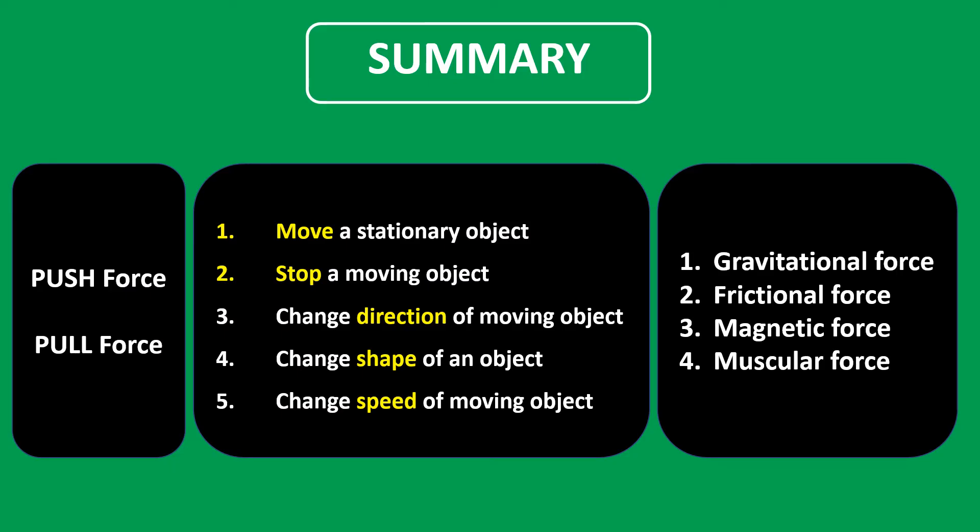We have reached the end of this chapter. To summarize: there are two types of forces — push force and pull force. There are five effects of forces: force can move a stationary object, stop a moving object, change the direction of a moving object, change the shape of an object, and change the speed of a moving object. There are four types of forces: gravitational force, frictional force, magnetic force, and muscular force. I hope you have learned this chapter well. Goodbye until next time!